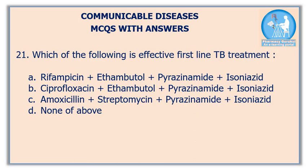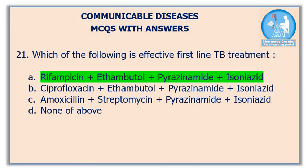Twenty-first question: which of the following is an effective first-line TB treatment composition? The correct answer is option A: Rifampin plus Ethambutol plus Pyrazinamide plus Isoniazid is the effective combination for TB treatment.